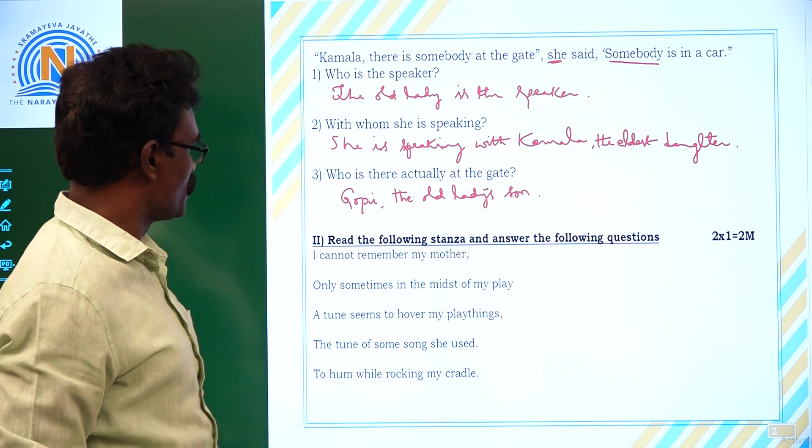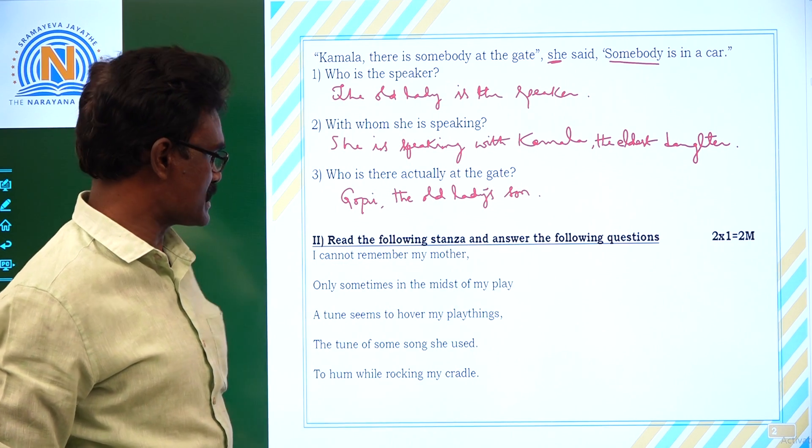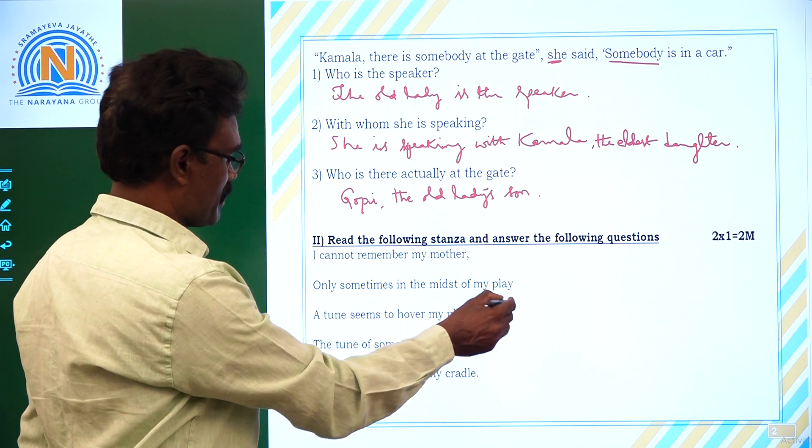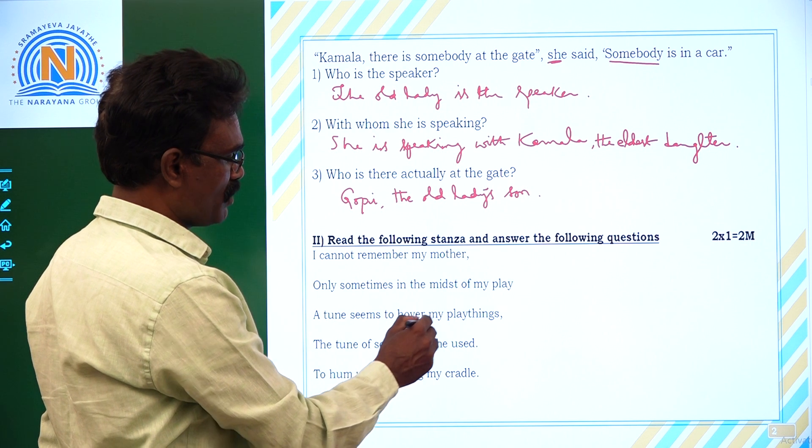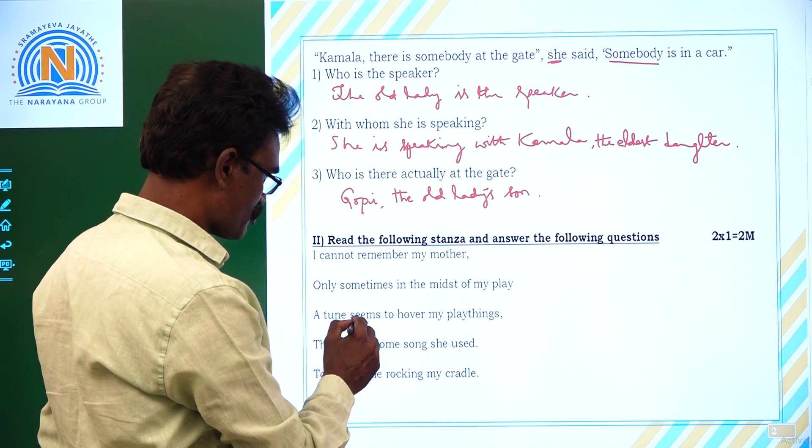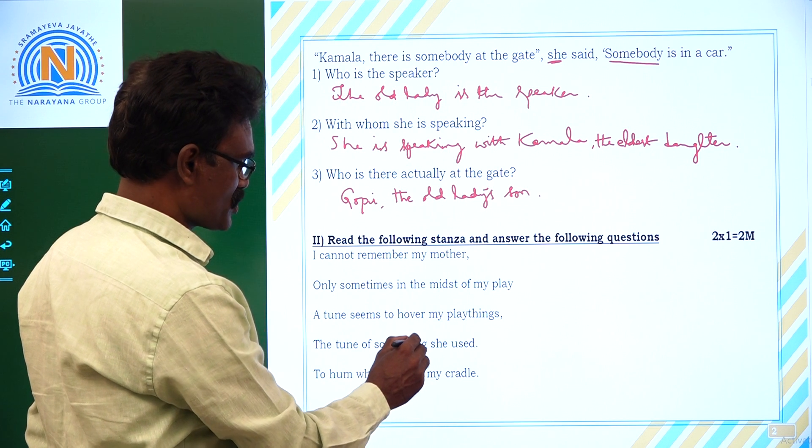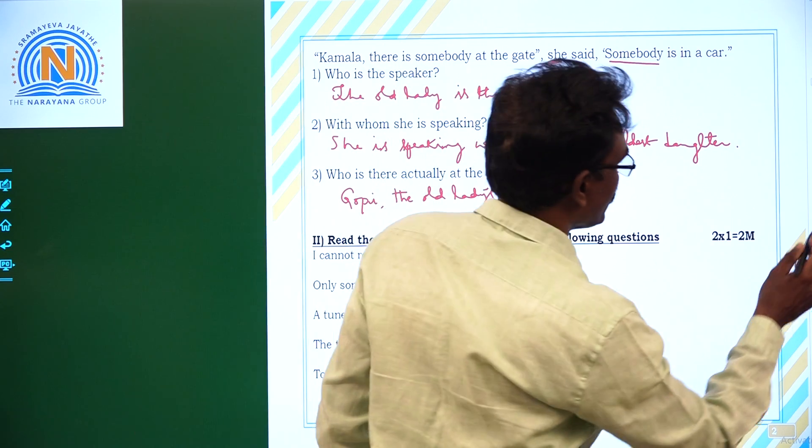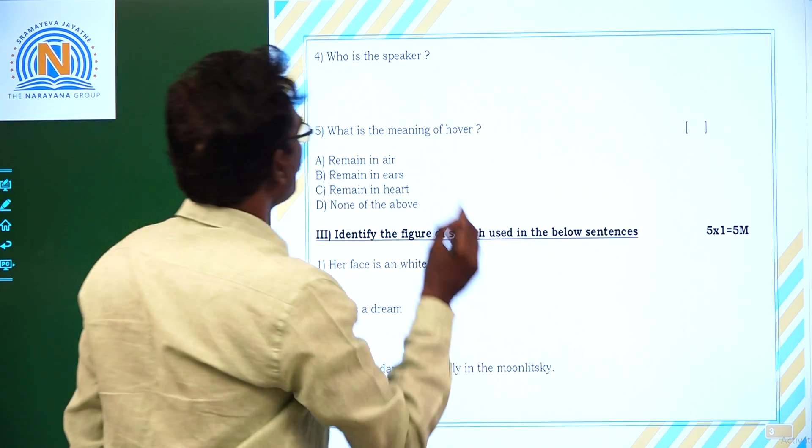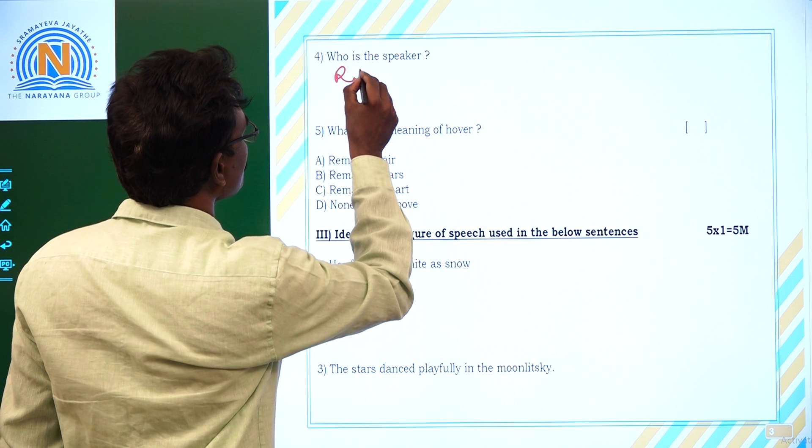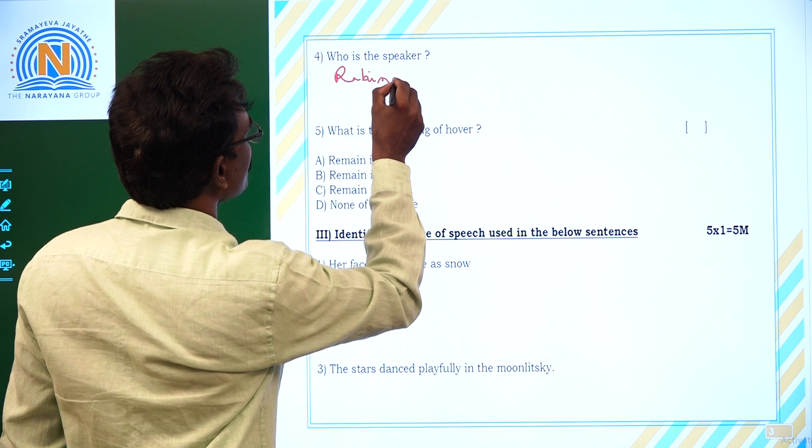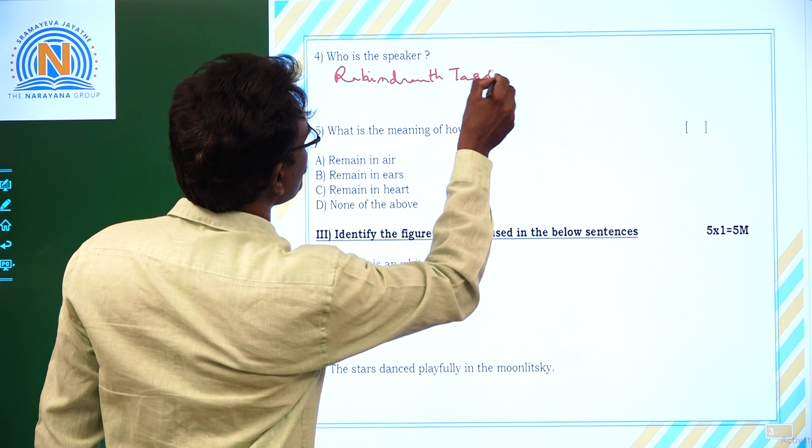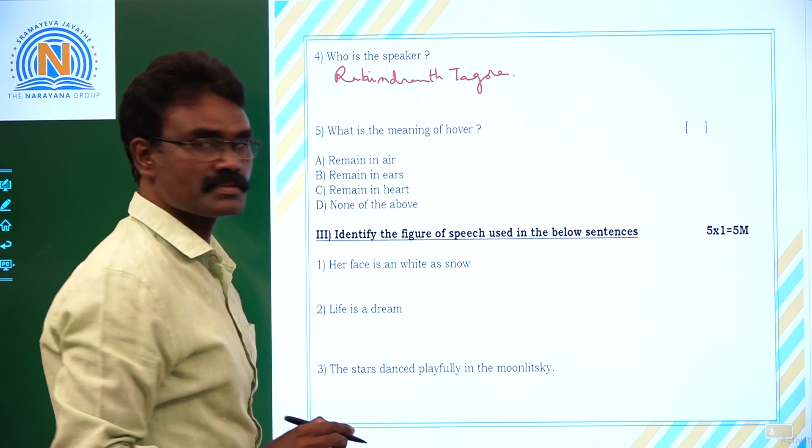Problem number two. Read the following stanza and answer the following questions. I cannot remember my mother. Only sometimes in the midst of my play, a tune seems to hover over my playthings, the tune of some song she used to hum while rocking my cradle. Who is the speaker? Ravindranath Tagore is the speaker, is the poet. Poet is the speaker here.